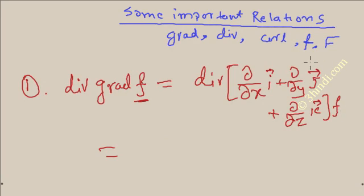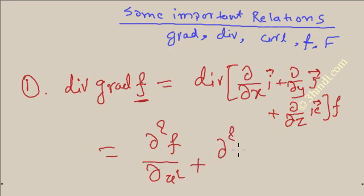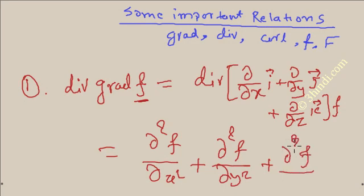So this is one vector quantity and you can apply div only for vector quantity. If you perform the div action, you will get the result. You have to differentiate this with respect to x, so the answer will be del squared f by del x squared plus del squared f by del y squared plus del squared f by del z squared.